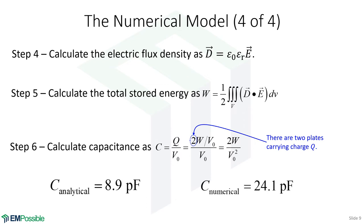Doing that, the numerical answer gives us 24.1 picofarads. The original analytical equation gave 8.9 picofarads, and Kirchhoff's approximation gave about 20 picofarads — actually a much better analytical equation to use. In either case, the numerical simulation accounts for non-uniform fields, fringing fields, and takes into account much more of the physics.